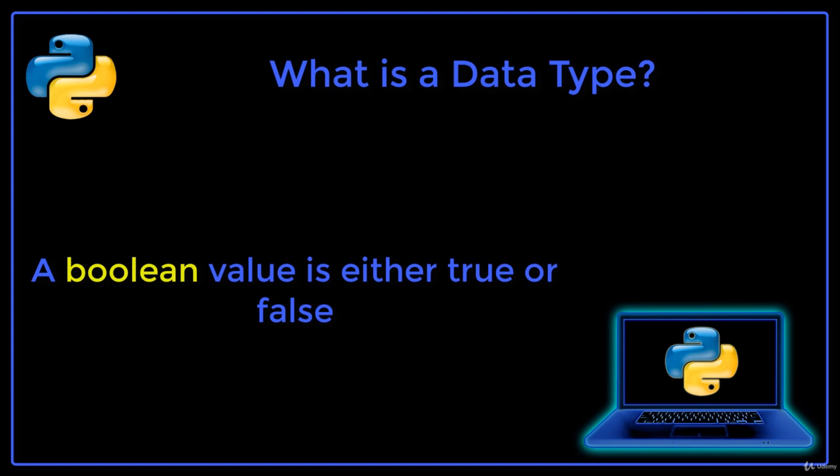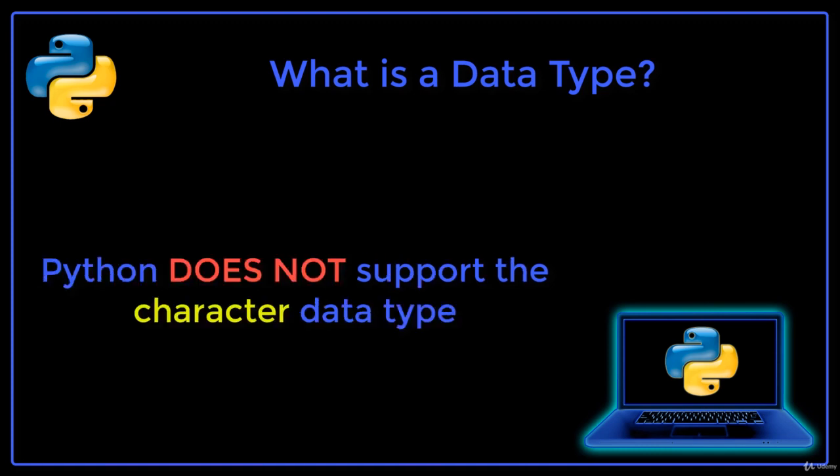A boolean value is either true or false. If you are familiar with another programming language, you may know about a fifth data type, the character data type. Python does not have a character data type, but to work with characters in Python, we can have a string value with just one character.